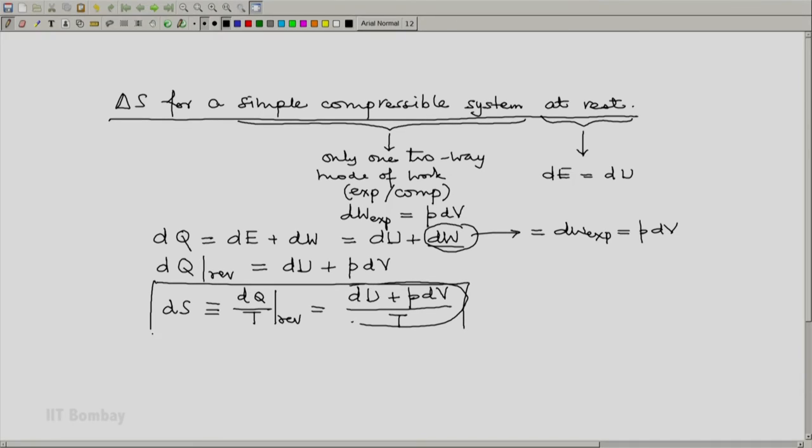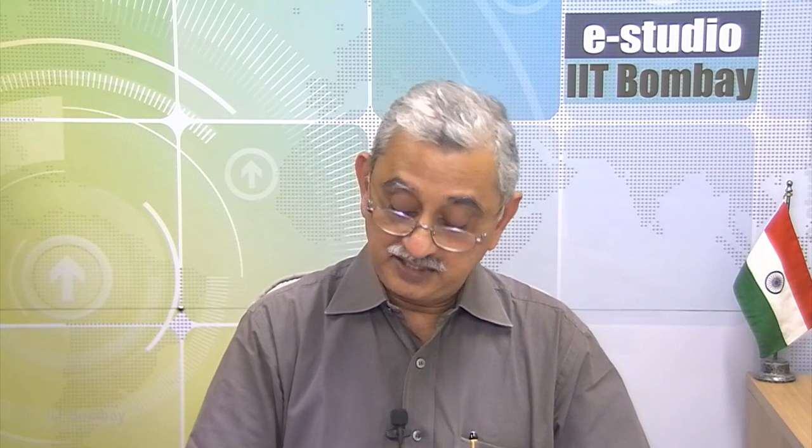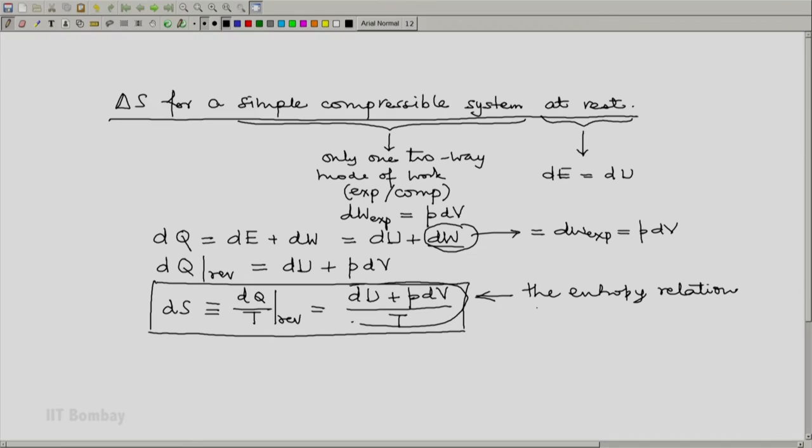This relation relating ds to du, dv, and p and t is sometimes known as the entropy relation for a simple compressible system at rest. That should always be at the back of our mind during these series of lectures. If there are other cases we will talk about them, but otherwise this is known as the entropy relation.